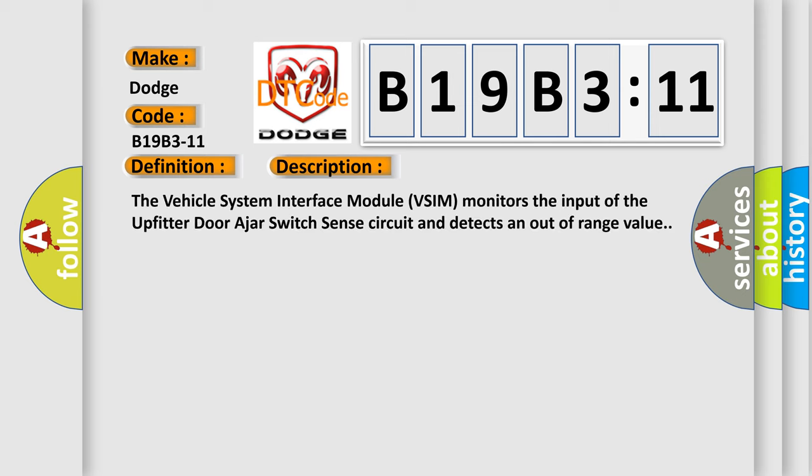The Vehicle System Interface Module VSIM monitors the input of the upfitter door ajar switch sense circuit and detects an out-of-range value. This diagnostic error occurs most often in these cases.